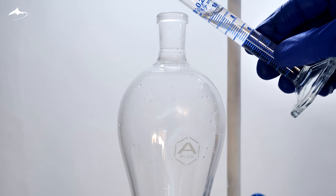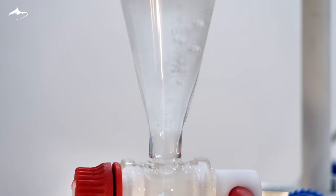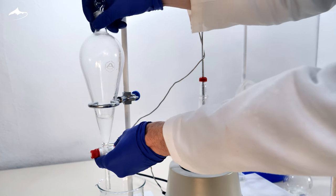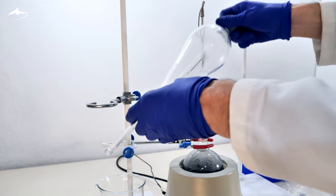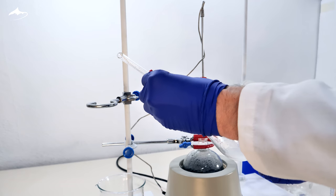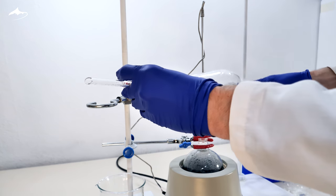Then, the organic phase is washed three times with saturated sodium chloride solution. For that, the funnel is stoppered and shaken gently first and vigorously after while opening the stopcock to release any pressure that may have built up inside.